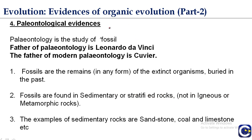Paleontological evidences: paleontology is the study of fossils. The father of paleontology is Leonardo da Vinci, while the father of modern paleontology is Cuvier. Fossils are the remains in any form of extinct organisms buried in the past — organisms that died and were buried in soil billions of years ago, whose forms are now available. Fossils are found in sedimentary or stratified rocks. Examples of sedimentary rocks are sandstone, coal, and limestone.